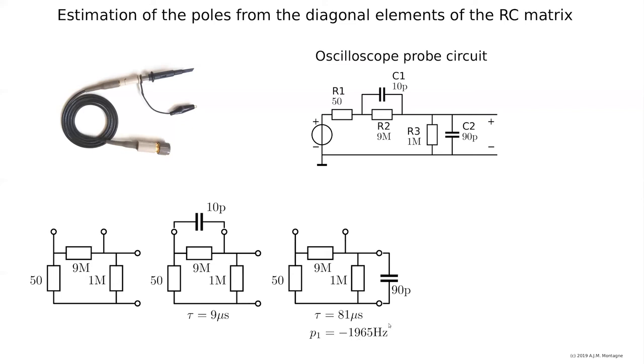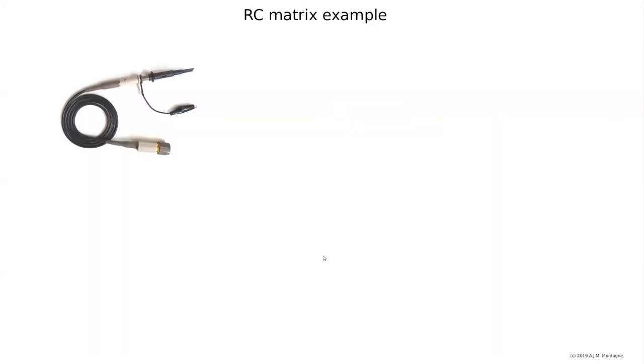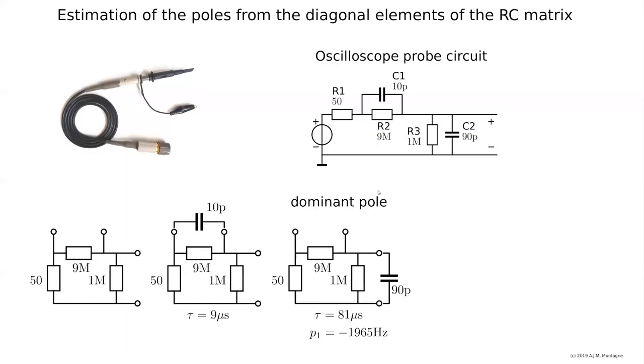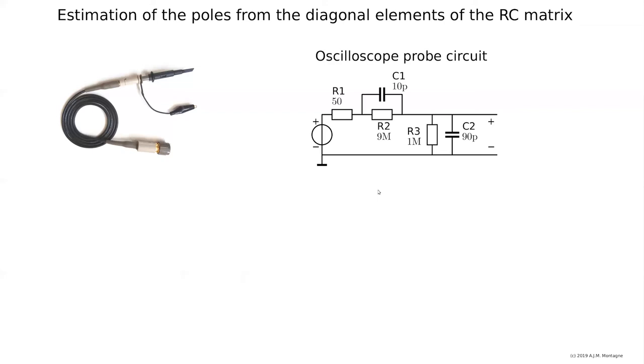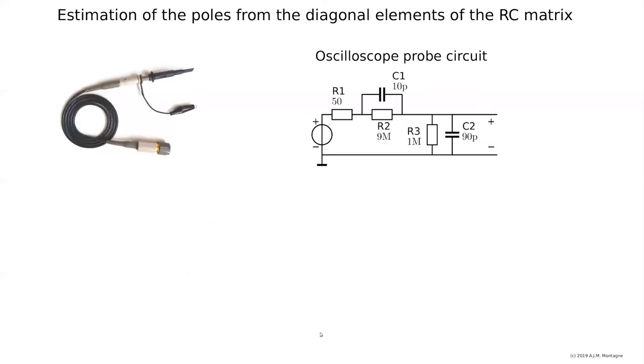Because the capacitor is much larger, this would then be the dominant pole. So this is the largest time constant, and this pole is 1965 hertz.